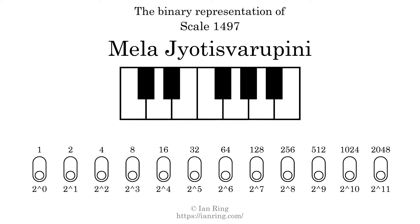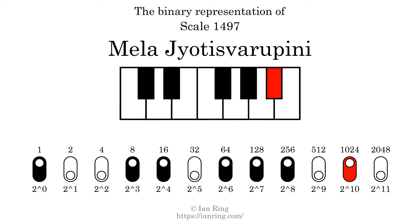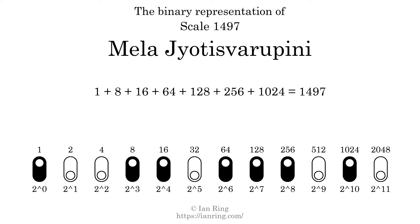The binary representation of this scale is determined by mapping tones of the scale to binary digits. Each binary digit represents a power of 2. To get the scale number, we add the powers of 2 together. The powers of 2 that are present in the scale, all added together, equals 1497. That is why the scale number, in decimal, is 1497.